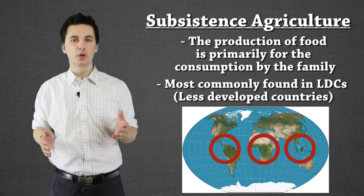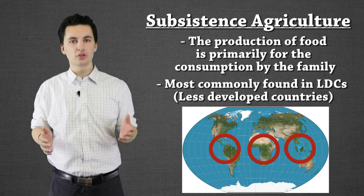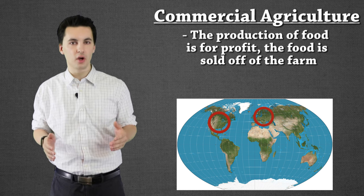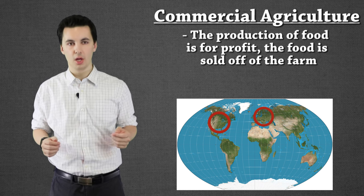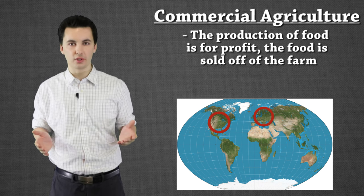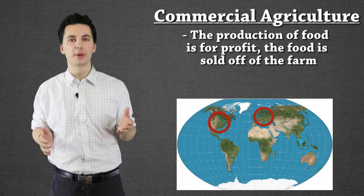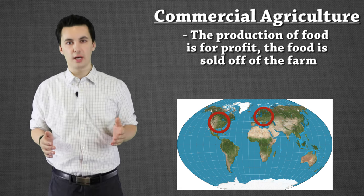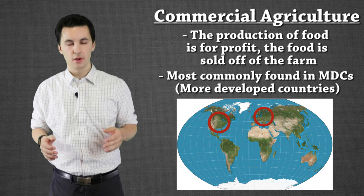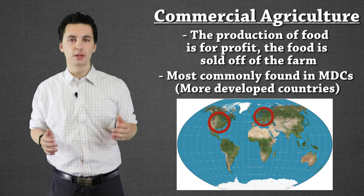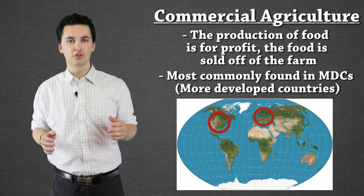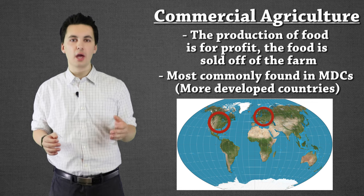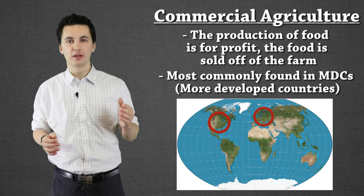The other type is commercial agriculture. Commercial agriculture is the production of food on farms to be sold off the farm — we're actually trying to produce revenue. Farmers here are making money; the goal is to make money. This is most commonly found in MDCs, or more developed countries. It's important to understand the difference between these two types of agriculture and also between MDC and LDC.